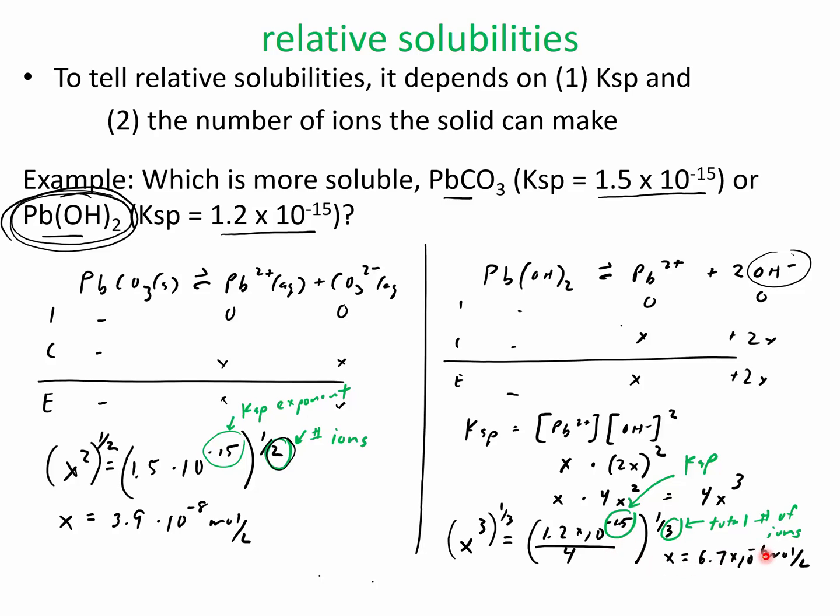So our exponent ends up being roughly 15 divided by 3. We got negative 6, but roughly is a rough estimate. And over here, our estimation was 15 divided by 2 or 7 and a half or 8 around there.